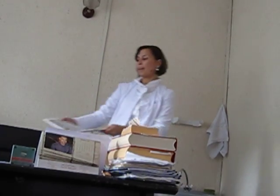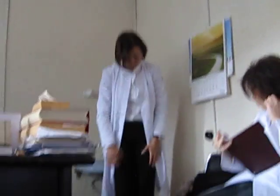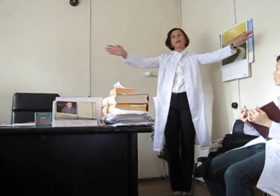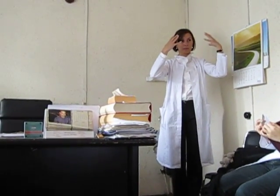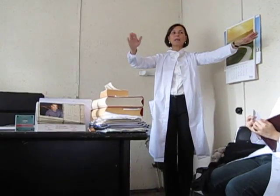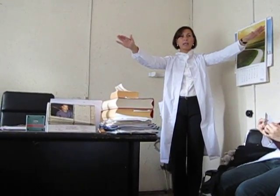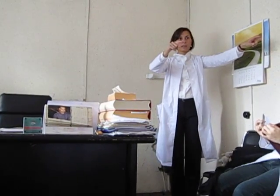Another test is the Romberg test. We ask the patient to put his legs together and hold his hands out. First we do this with eyes open. If the patient is stable with eyes open, he doesn't have problems with the vermis of the cerebellum. But if he closes his eyes and begins to sway, this indicates a different problem.